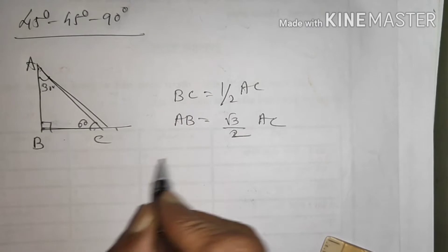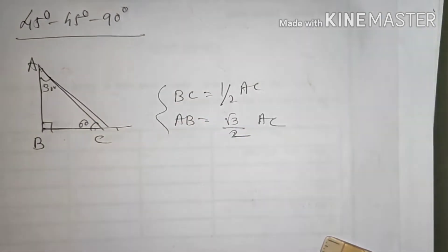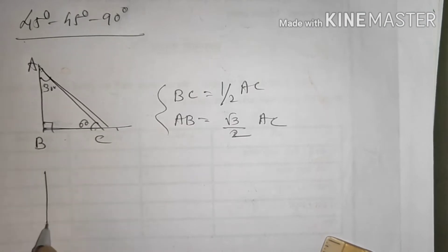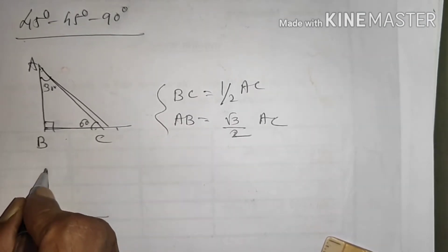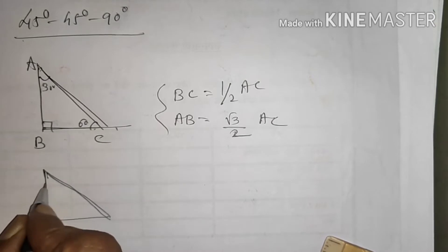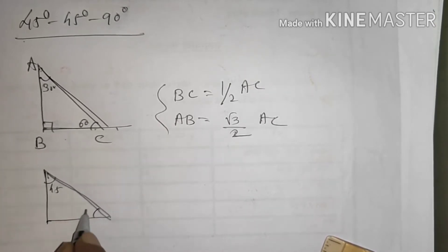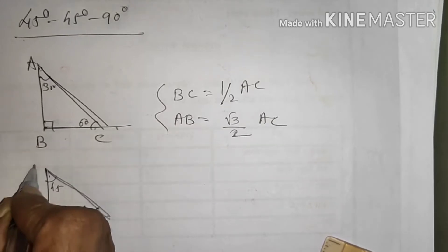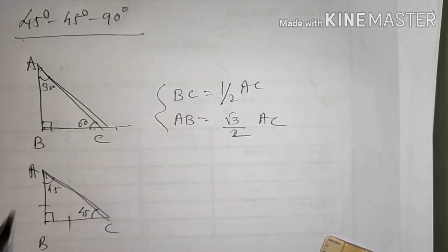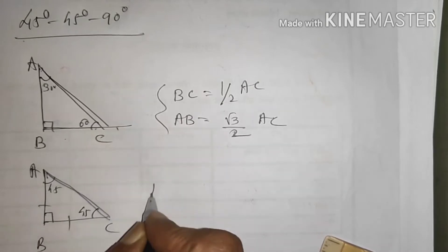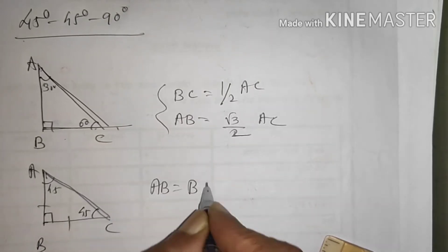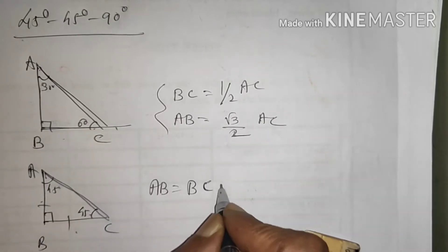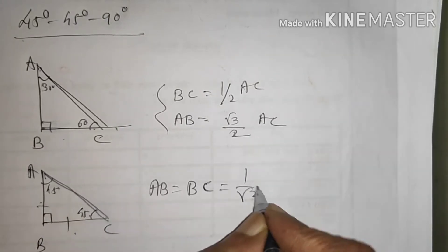These two properties we have seen last year — the 30-60-90 and 45-45-90 degree triangles. In a 45-45-90 degree triangle, the two legs are congruent. The side opposite to the 45 degree angle, AB, is equal to BC, and each is equal to (1/√2) times the hypotenuse.